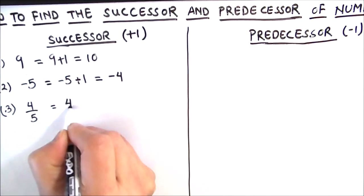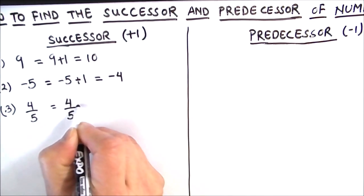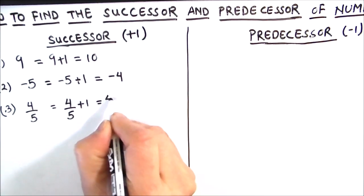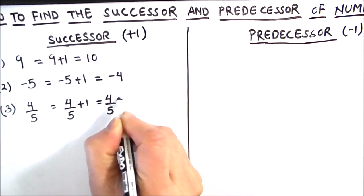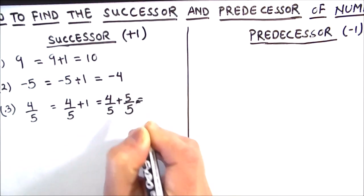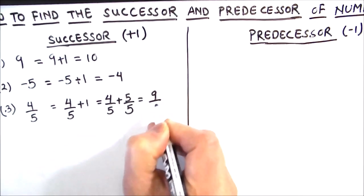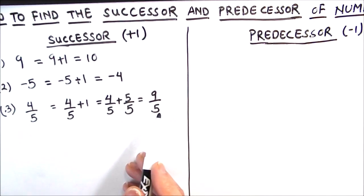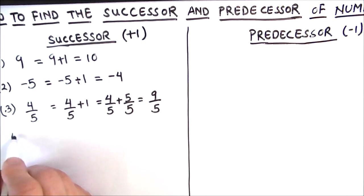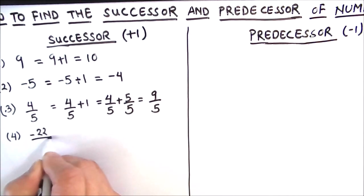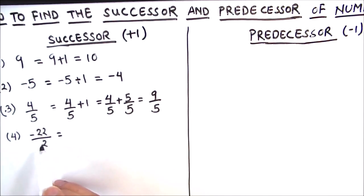Next, let's take a rational number: 4/5. The successor of this rational number will be 4/5 plus 1, which is equal to 4/5 plus 5/5, which is equal to 9/5. So the successor of 4/5 is 9/5.